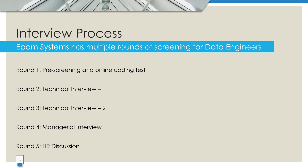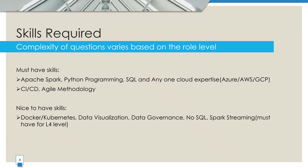That's the complete overview of the EPAM data engineering process. Now let's talk about the skills required for data engineering roles at EPAM. The complexity of the questions always depends on your role level — junior, senior, or lead. But there are must-have skills that every candidate should prepare for: Apache Spark using Python or Scala, Python programming, SQL, and one cloud platform — Azure, AWS, or GCP. In addition, knowledge of CI/CD and Agile methods is also considered a must. These form the foundation for every level.